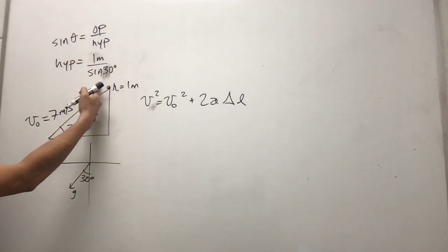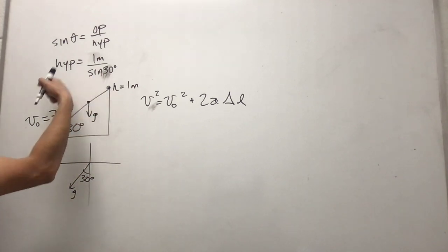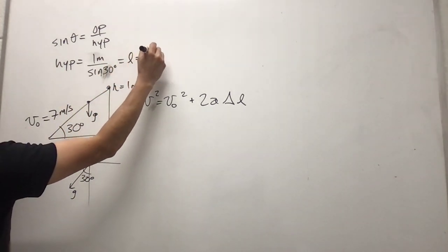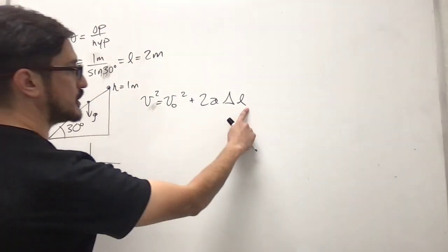And the height is one meter. And sine of 30 is 0.5 so that means that l, this hypotenuse, is two meters. So this is two meters.